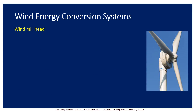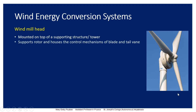The next component is the windmill head. It is mounted on top of the supporting structure or tower. The windmill head supports the rotor and houses the control mechanisms of the blade and the tail vane and the rod for rotation. The tail vane indicates the wind direction, and the windmill head supports both the tail vane and the rod.